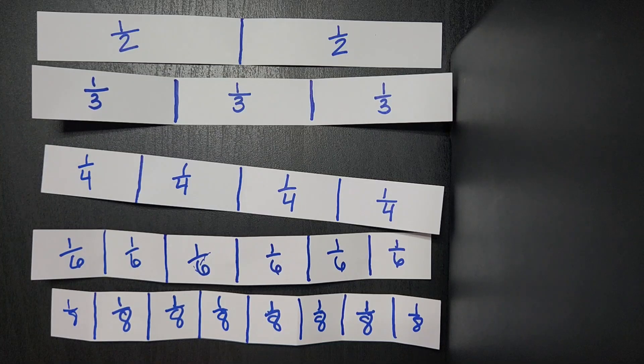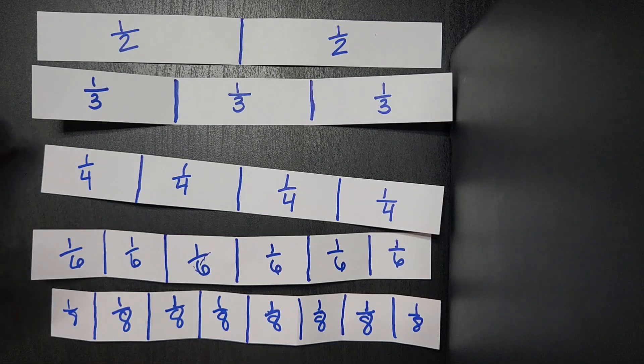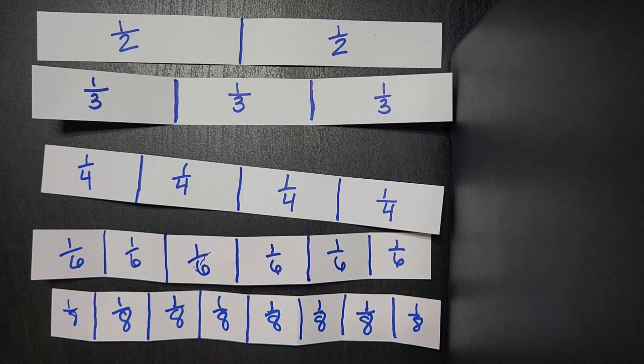So in third grade, numerators are the same if we have unlike denominators. So they're quickly able to identify whatever the fraction is with a denominator of three is larger than eight. I hope you have found this idea helpful. If you have any questions, please just leave me a comment.